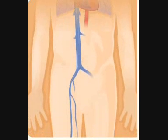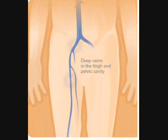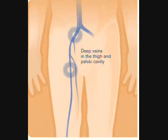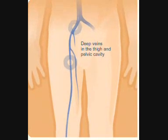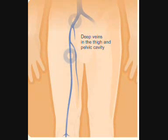Deep vein thrombosis is a blood clot that forms in a vein deep in the body. Most occur in the deep veins of the thigh or lower leg.